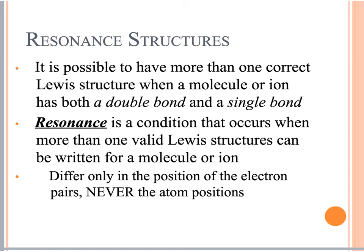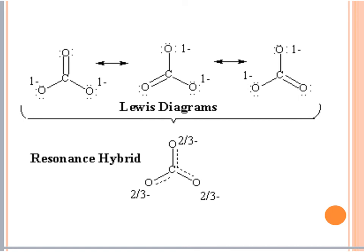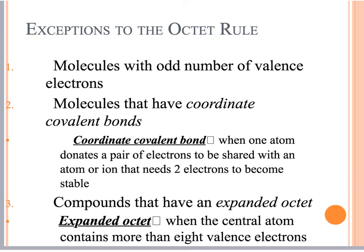Resonance is not something I'll have you draw — it's just a concept to know about. There are times where it's possible to have one or more correct Lewis structures, especially when you have a double and single bond together. This is called resonance. The structures differ only in the position of the electrons, never in the atom positions. For example, you can put a double bond in a couple of places and it's still correct. The way you'd really draw this is with dotted lines at each spot, but I won't have you draw that.